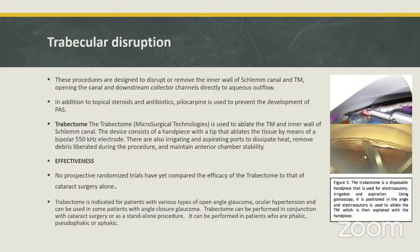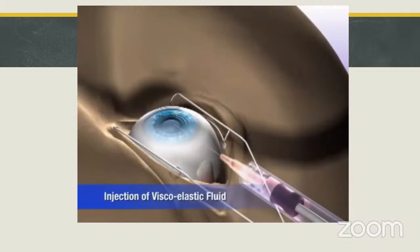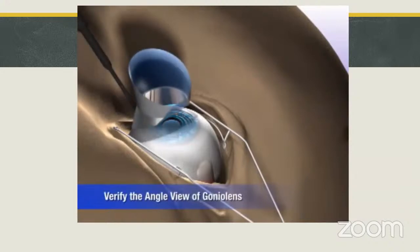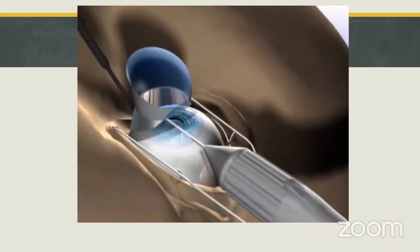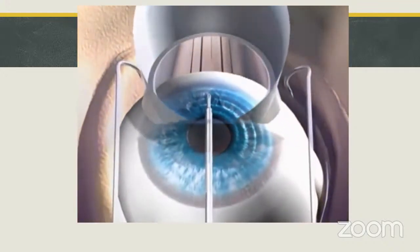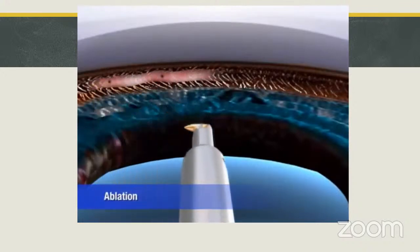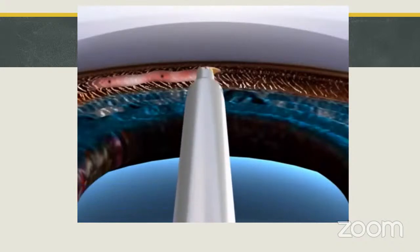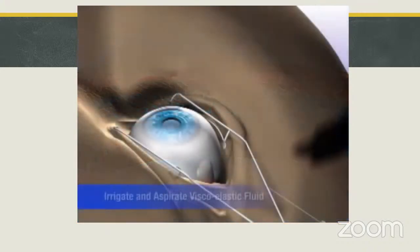Trabectome is indicated for patients with various types of open-angle glaucoma, ocular hypertension, and can be used in some patients with angle closure glaucoma. It can be performed in conjunction with cataract surgery or as a standalone procedure in phakic, aphakic, or pseudophakic patients. There have not been any prospective randomized trials comparing trabectome efficacy to cataract surgery alone. In the video, after a scleral incision and viscoelastic application, the trabecular meshwork is ablated. The device is brought into the anterior chamber, rotated 180 degrees, and further ablation is performed.